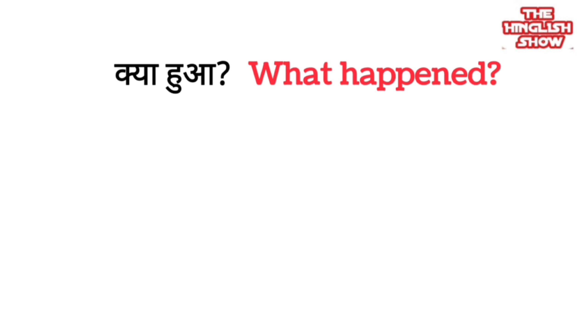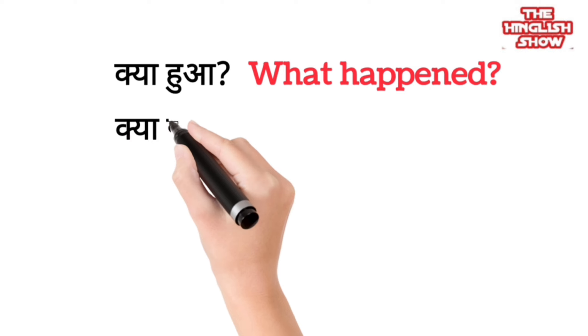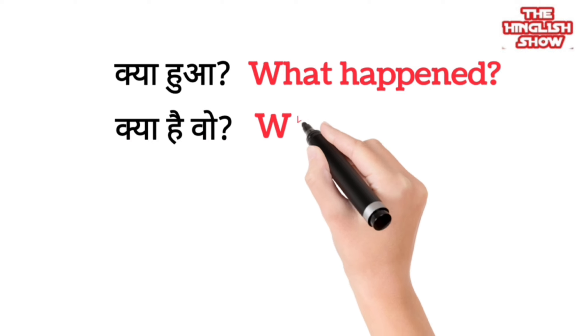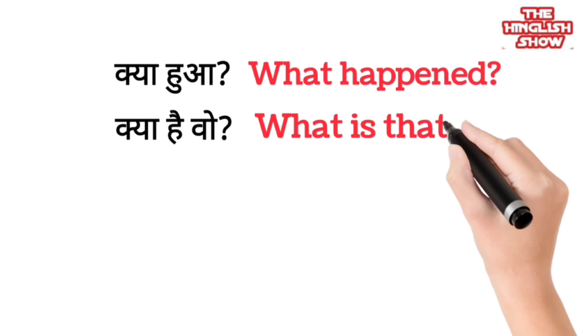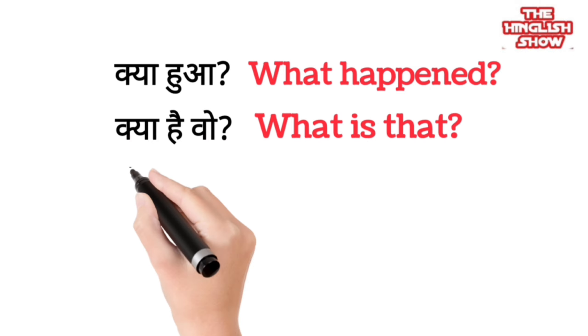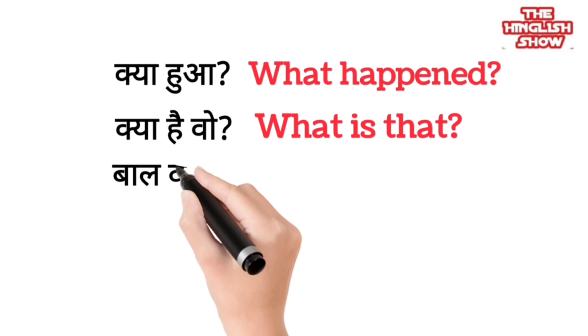Kya hua — What happened. When you ask someone 'kya hua', it means 'what happened'. Kya hai wo — What is that.